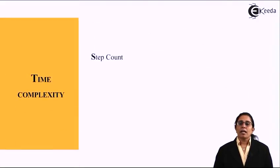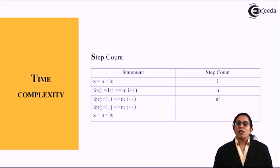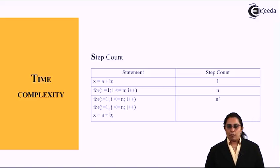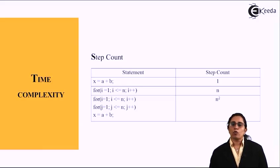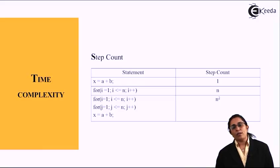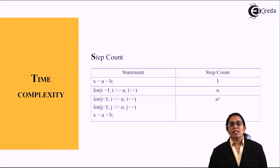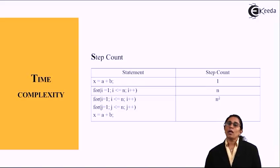The second one is the step count. Now for step count, let's take an example. As shown, x equals a plus b takes a step count of one. When we take a for loop for instance, it changes from 1 to n, then the step count is n.